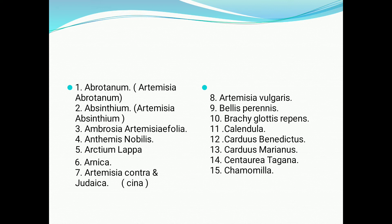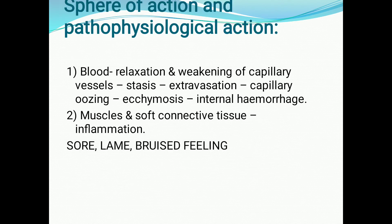The homeopathic medicines prepared from the Composite family include Abrotanum, Arnica, Cina, Chamomilla, Bellis Perennis, Calendula, Eupatorium Perforatum, and others.